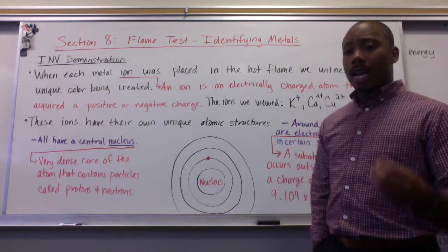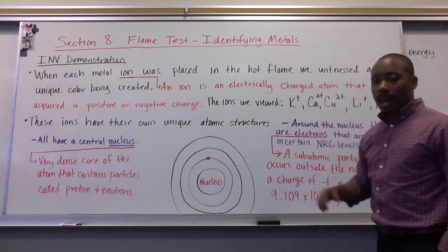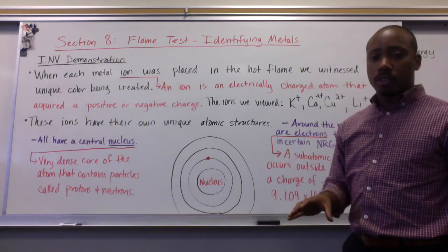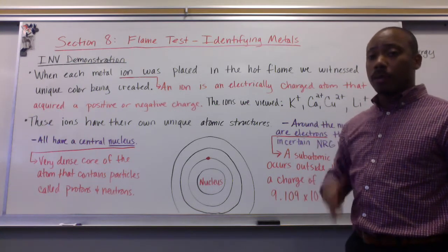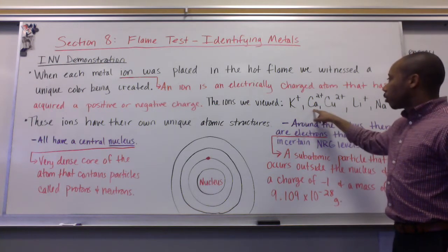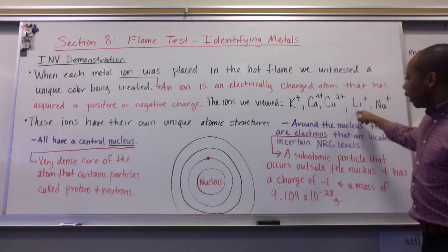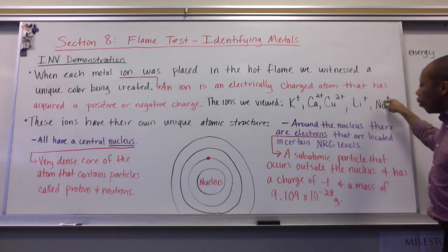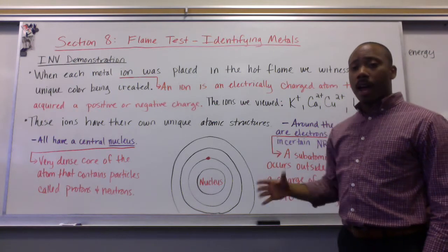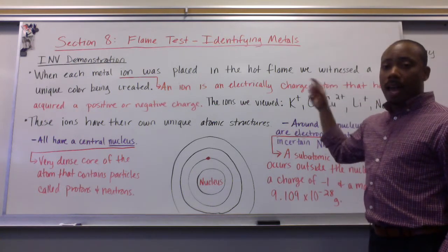Let's first review what an ion is. An ion is an electrically charged atom that has acquired a positive or a negative charge. The ions that we viewed in class were: potassium with a 1+ charge, calcium with a 2+ charge, copper with a 2+ charge, lithium with a 1+ charge, and sodium with a 1+ charge. We'll go over what these charges mean in the future, but for right now, atoms with charges are known as ions.